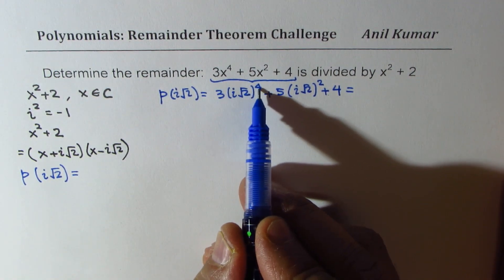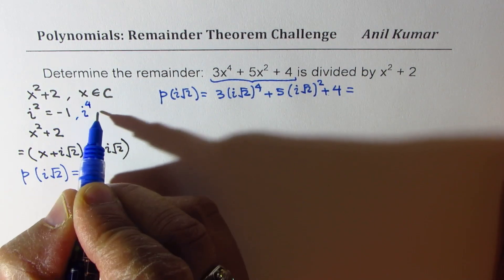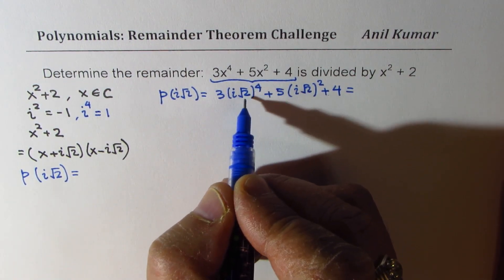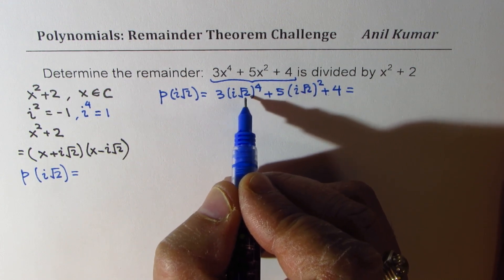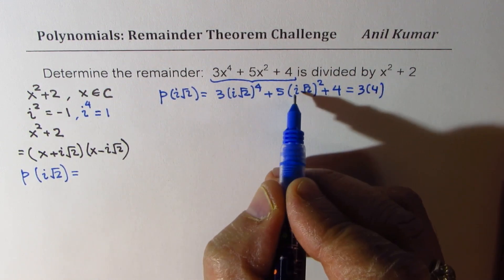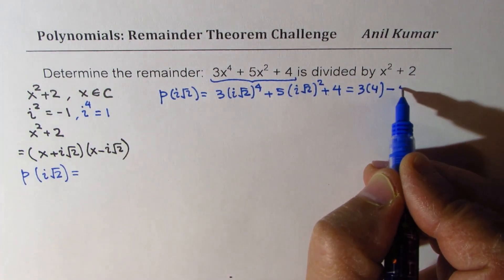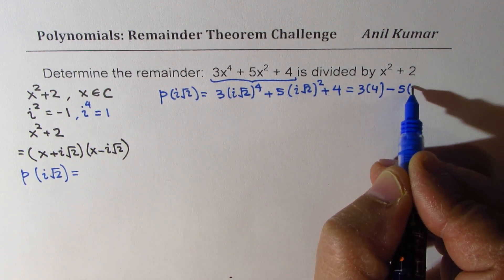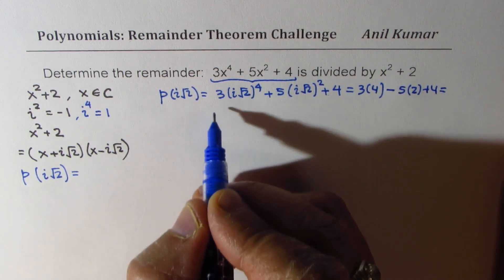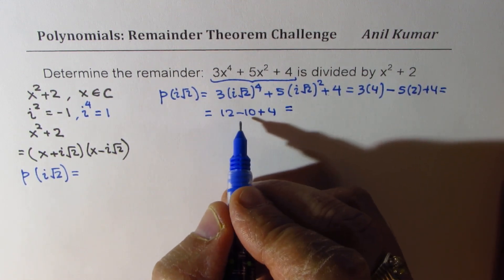Now, i to the power of 4 will be plus 1 — since i squared is negative 1, i to the power of 4 is the square of that, so it is plus 1. Square root of 2 to the power of 4 is 2 squared, which is 4. So we get 3 times 4 here. For the next term, i squared is negative 1, so we get 5 times negative 1 times 2, which gives negative 10. So the total is 12 minus 10 plus 4, which equals 6.